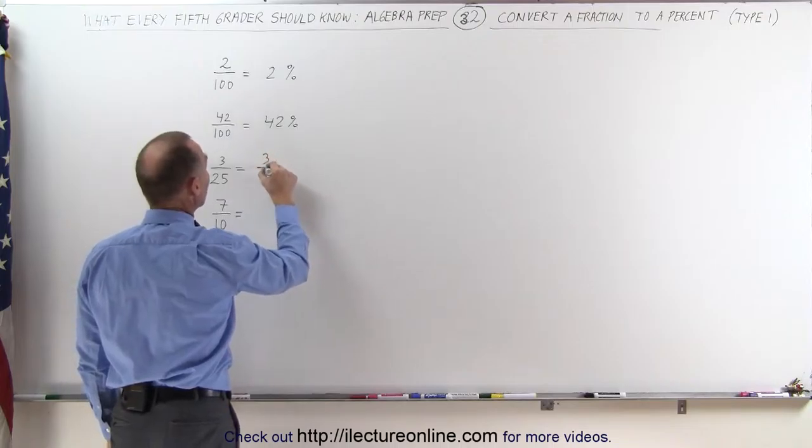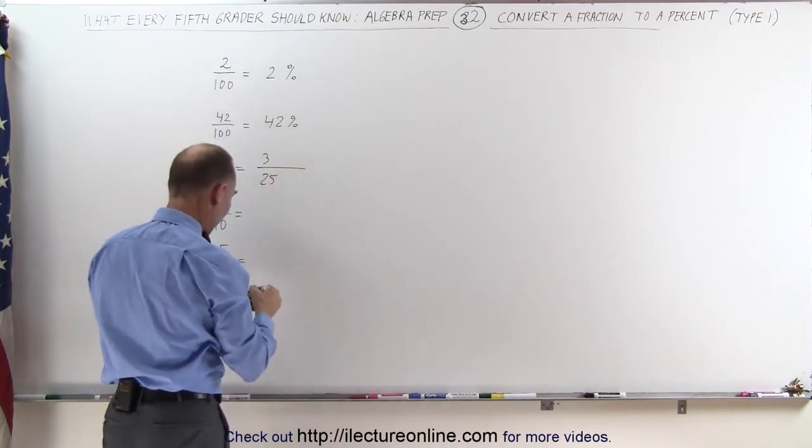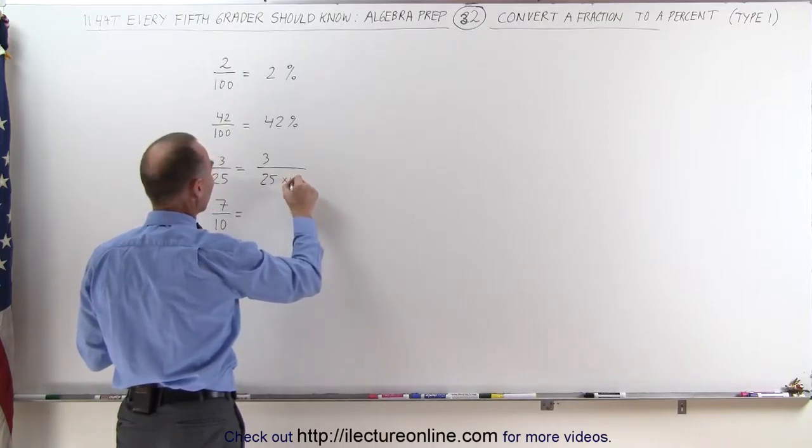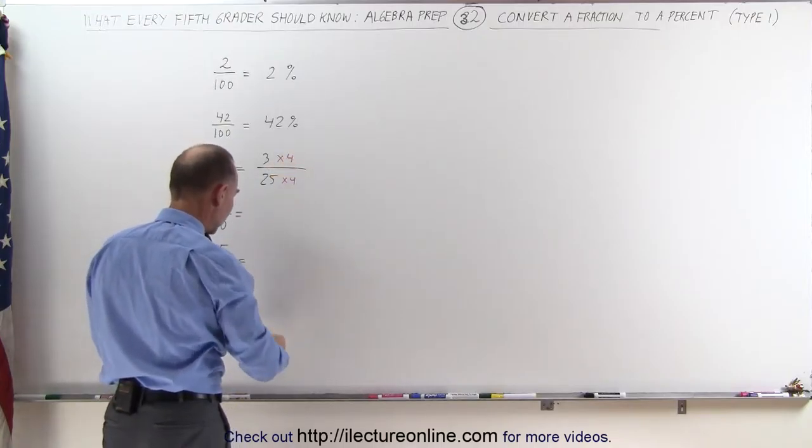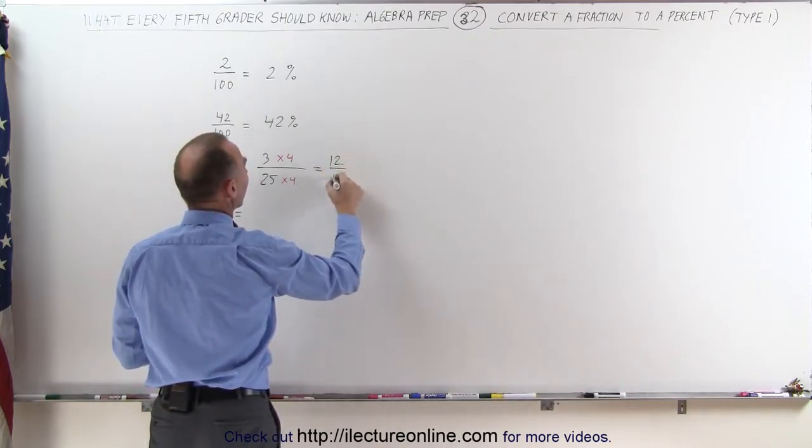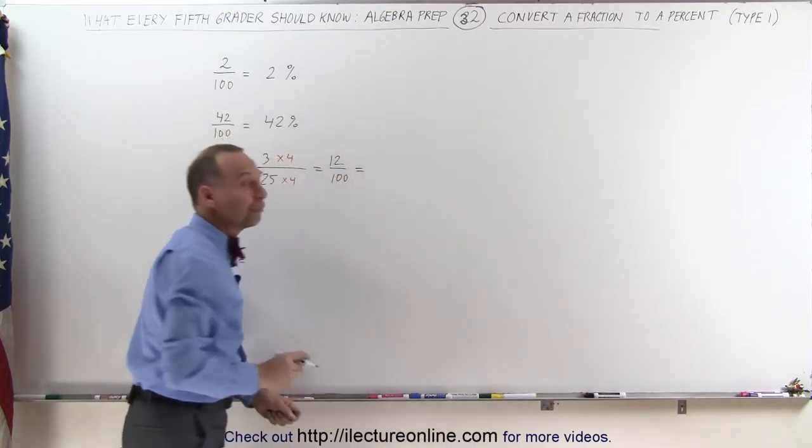What I do then is I take 3 over 25, I'm going to multiply the denominator by 4, and of course I must do the same to the numerator. When I do that, my fraction now becomes 12 divided by 100.